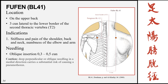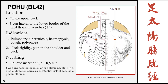The next point is Fufen, Bladder 41, located on the upper back three cun lateral to the lower border of the second thoracic vertebra. The previous points from Bladder 11 down to Bladder 24-25 were all 1.5 cun lateral to the midline. Now we're looking at the line of points three cun lateral, starting from Bladder 41. Indications include stiffness and pain of the shoulder, back, and neck, and numbness of the elbow and arm. Insertion is oblique 0.3 to 0.5 cun, directed inferiorly. Caution against deep perpendicular or medially oblique needling due to risk of pneumothorax.